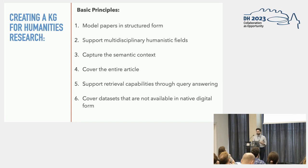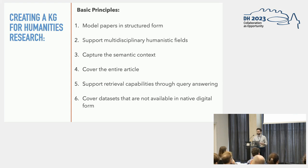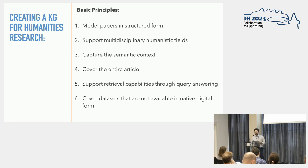Our basic principles in creating such a knowledge graph were: first, to model papers in a structured form using a conceptual framework that provides concepts and relations we can use in a unified manner across all papers. We want to support multidisciplinary humanistic fields by using concepts that are specific for the scholarly domain but general enough to be applied in every discipline. We also want to capture the semantic context of those entities — not just extract methods or research activities, but associate them so we can capture the research activity context of a method: where it was used and what kind of objectives were fulfilled during that use.